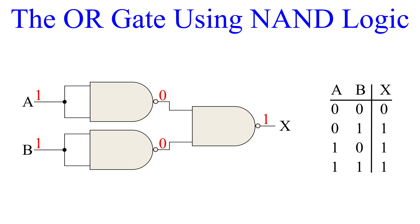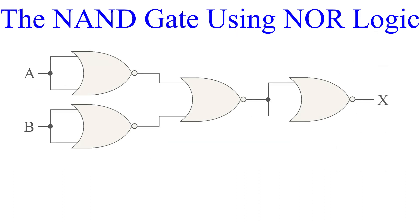And there you have it — the truth table is that of an OR gate. The NOT gate, AND gate, and OR gates were all pretty simple. Let's get a little more complicated by making a NAND gate using NOR gates. It's four gates, but really we can break this down into two very simple parts.